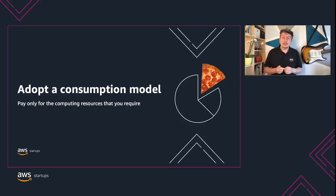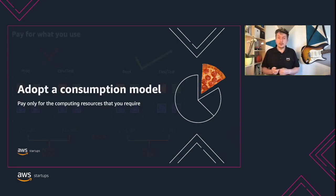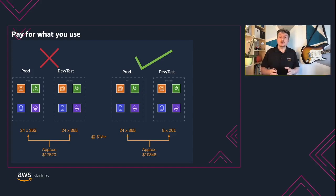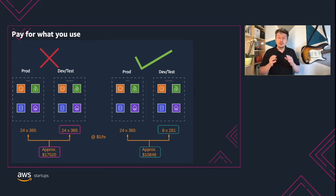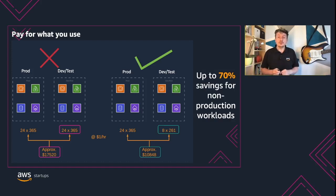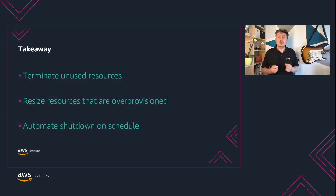The first design principle we will look at is adopt a consumption model — pay only for the computing resources that you require. For example, production environments are usually required to run 24 hours a day all year long, however your dev and test environments are usually only used during business hours and will sit idle outside of these times. As shown on the diagram, you can shut down non-production resources when not needed, and through this measure alone you can save up to 70% on non-production workload.